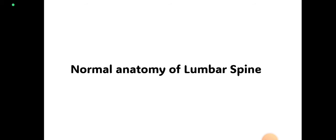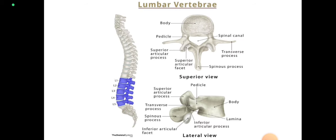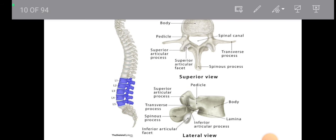Before going into x-ray interpretation, we will learn about the normal anatomy of the lumbar spine. We should know the normal parts first, then we will go for the x-ray, then we will learn about the abnormal x-rays. There are a total of five lumbar vertebrae in the human body. The lumbar vertebra has the largest vertebral body compared to other vertebrae.